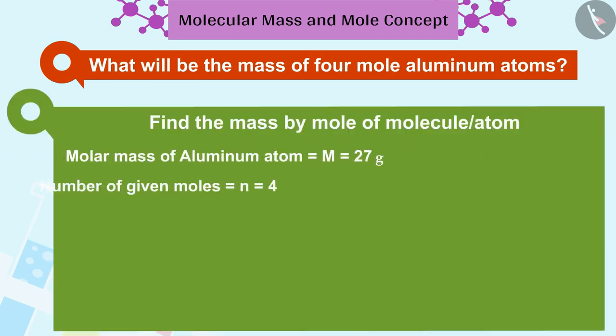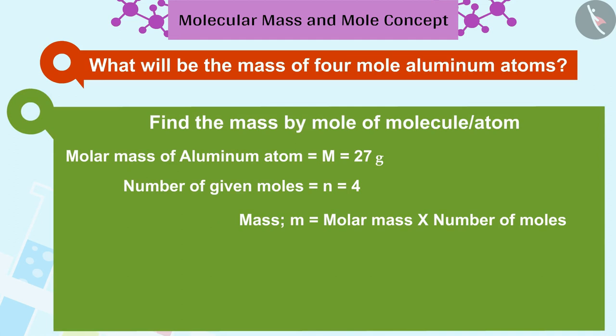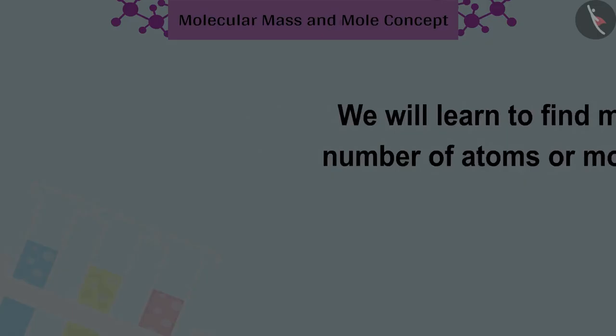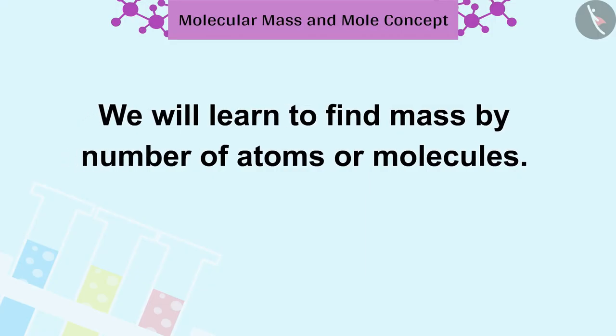To find this, we will multiply the molar mass of the aluminum atom by the number of moles. In this way, the mass of 4 mole aluminum atoms is 108 grams.